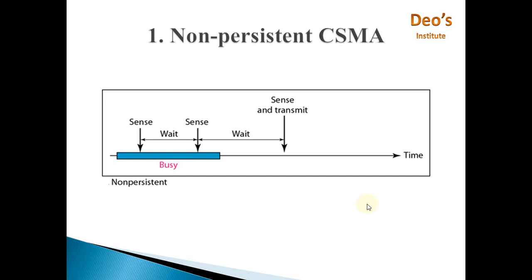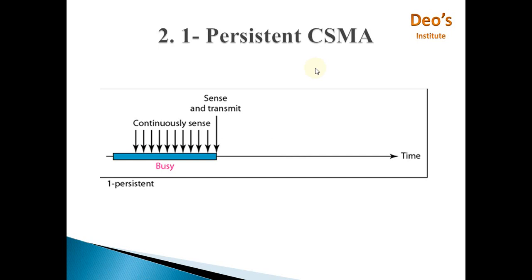There are three different types of CSMA. The first one is non-persistent CSMA. In non-persistent CSMA, the station senses the channel and if it finds the channel is busy, it will wait for a particular amount of time and then sense the channel again. If it is still busy, it waits again, and this wait time increases each round. After waiting, the station senses again and when the channel is found idle, it can transmit the message.